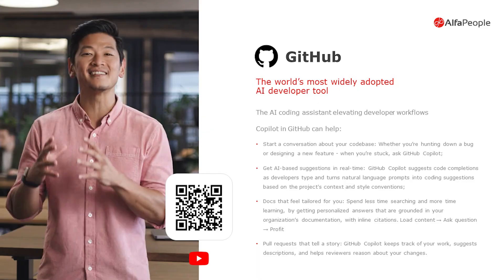GitHub. In GitHub, the co-pilot suggests code completions as developers type and transforms natural language prompts into coding suggestions based on the project context and style conventions. It also clarifies developer doubts and supports in creating documentation.